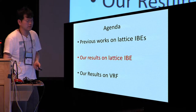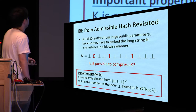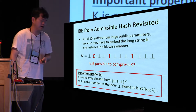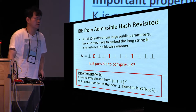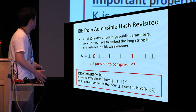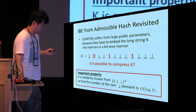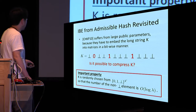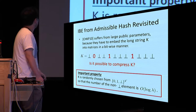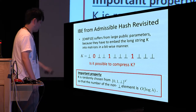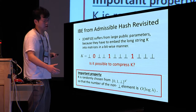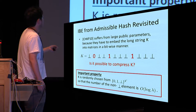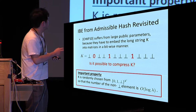Now I explain our results on lattice IBE schemes. The reason Cash et al.'s scheme suffers from large public parameters is that they embed the long string K into matrices in a bit-wise or component-wise manner. So a natural direction is to compress the representation of K. An important property is that K is randomly chosen so that the number of non-bot elements is order of log lambda. Although K is a very long string, most positions are assigned the symbol bot, and only a small number of positions are assigned 0 or 1.